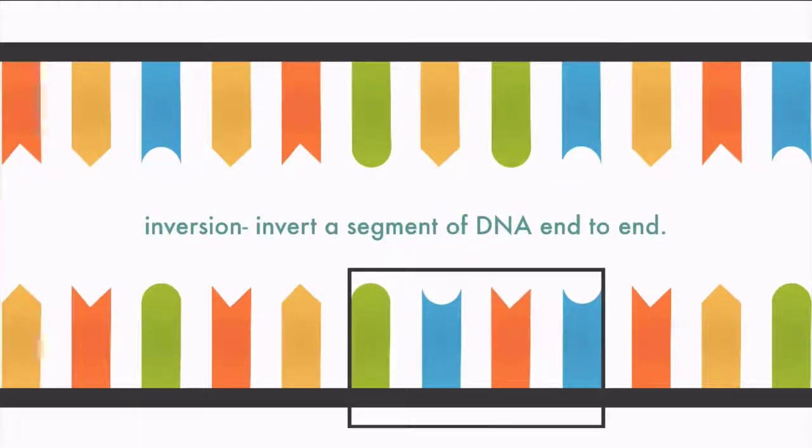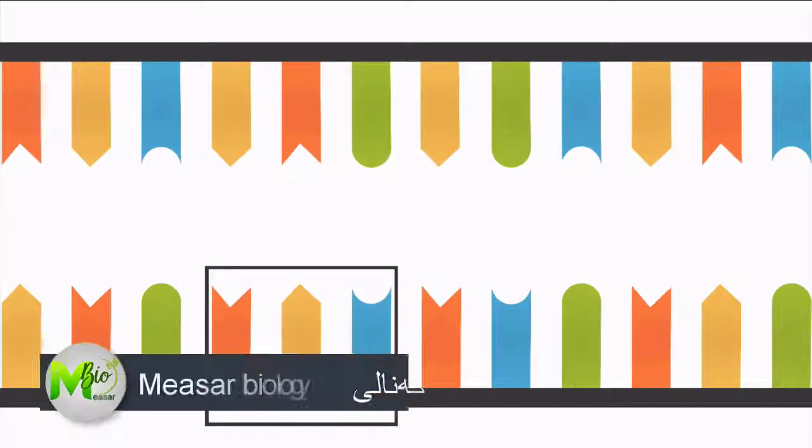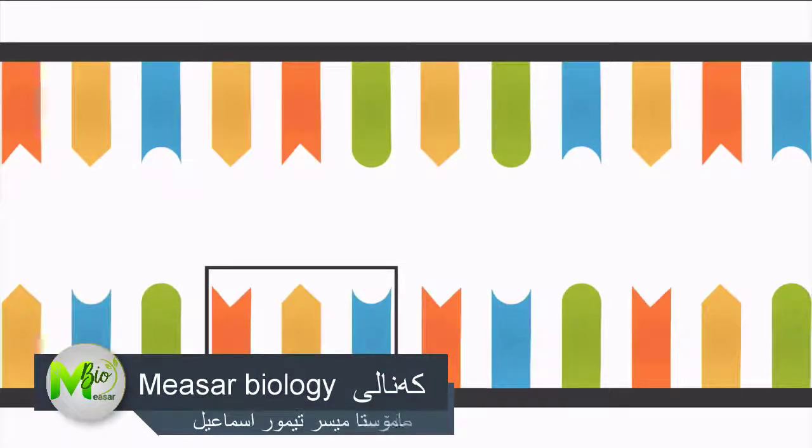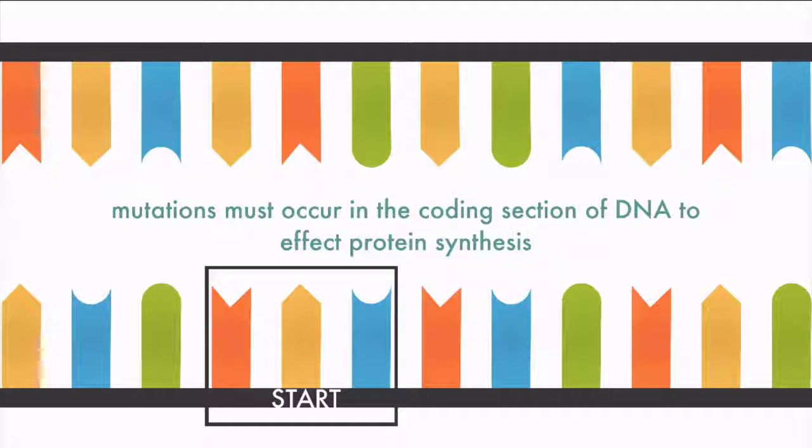but not all mutations have an effect on protein. Remember, during translation, a start codon must first be read to begin coding the protein. If the mutation happens before or after the protein coding sequence, there will be no effect on the protein. Mutations must occur in the coding section of DNA to affect protein synthesis. Otherwise, nothing happens.